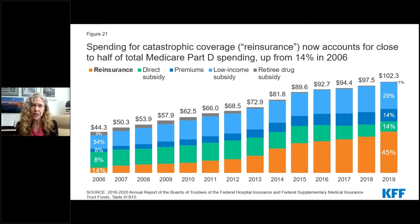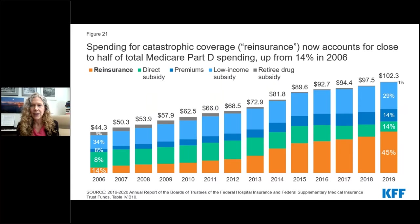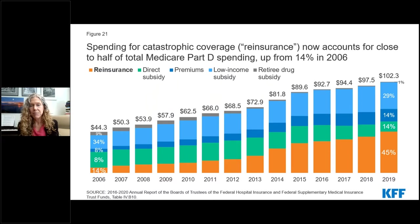Although only a relatively small number of Part D enrollees reached the catastrophic coverage phase, recall that the federal government pays 80% of total costs for this part of the benefit. Essentially, the federal government is subsidizing the majority of costs for high-cost enrollees. Back when Part D started, this allocation of liability seemed pretty reasonable when the expectation was that these government reinsurance payments would only account for a relatively small share of total program spending. In fact, back in 2006, it was only 14%. But now, government spending on reinsurance is about half of all Medicare Part D program spending.